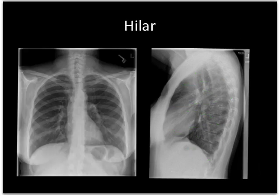Next, look at the lung hila. First of all, check their position. Don't forget, the left lung hilum should always be higher than the right — if it's not, something is going wrong. Then look at the shape of them and the branching pattern, making sure there are no masses and they're not unduly enlarged. This is obviously something you acquire with experience from looking at a lot of chest X-rays.